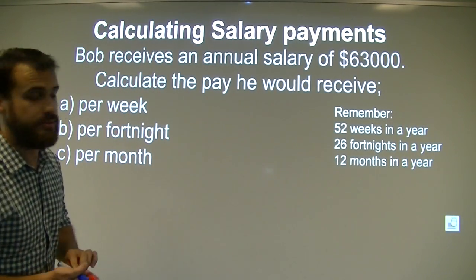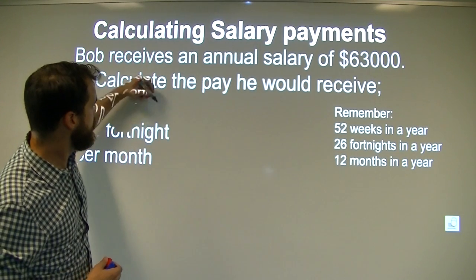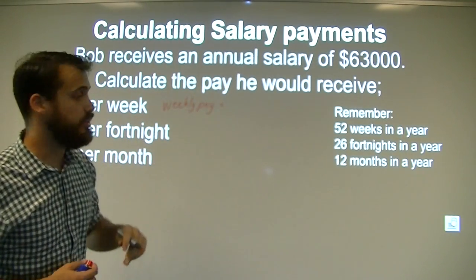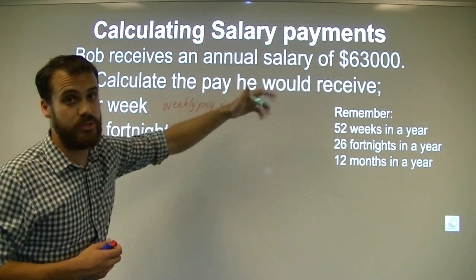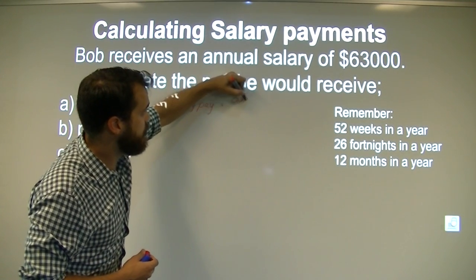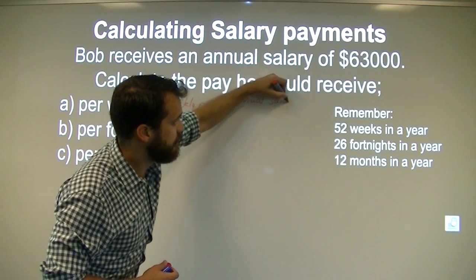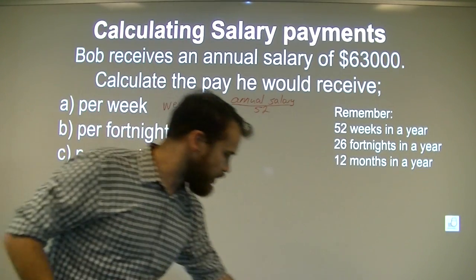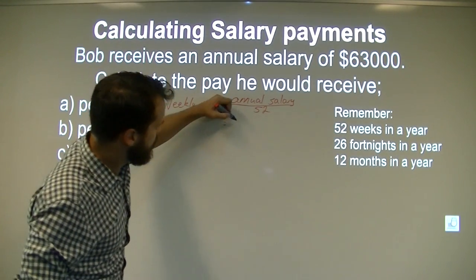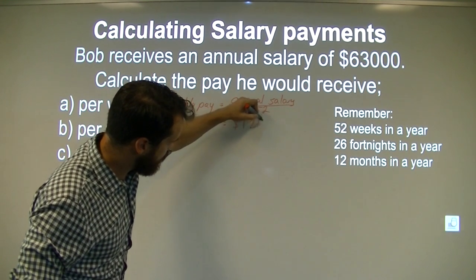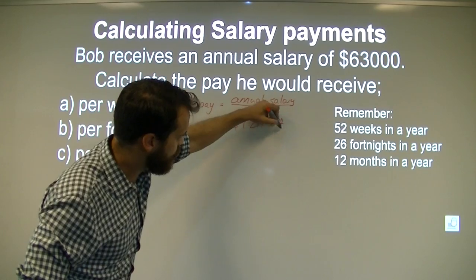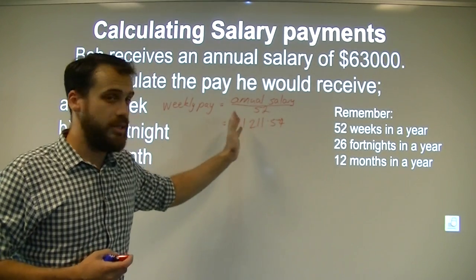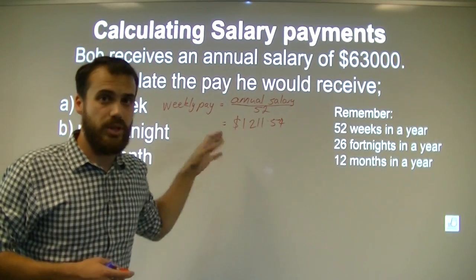For part A, this person's weekly pay is going to be equal to their annual salary divided by 52. If you put that into your calculator, you'll get $1,211.54. Remember, when dealing with money, round to two decimal places — it wouldn't make sense to go any more or any less than two decimal places.